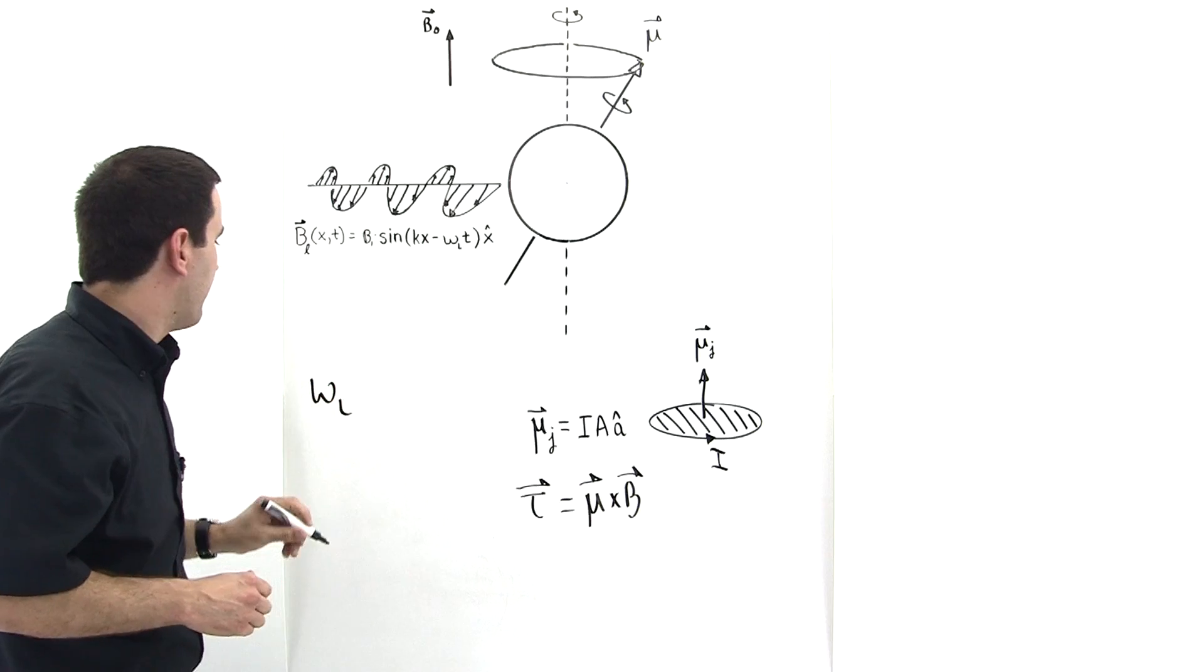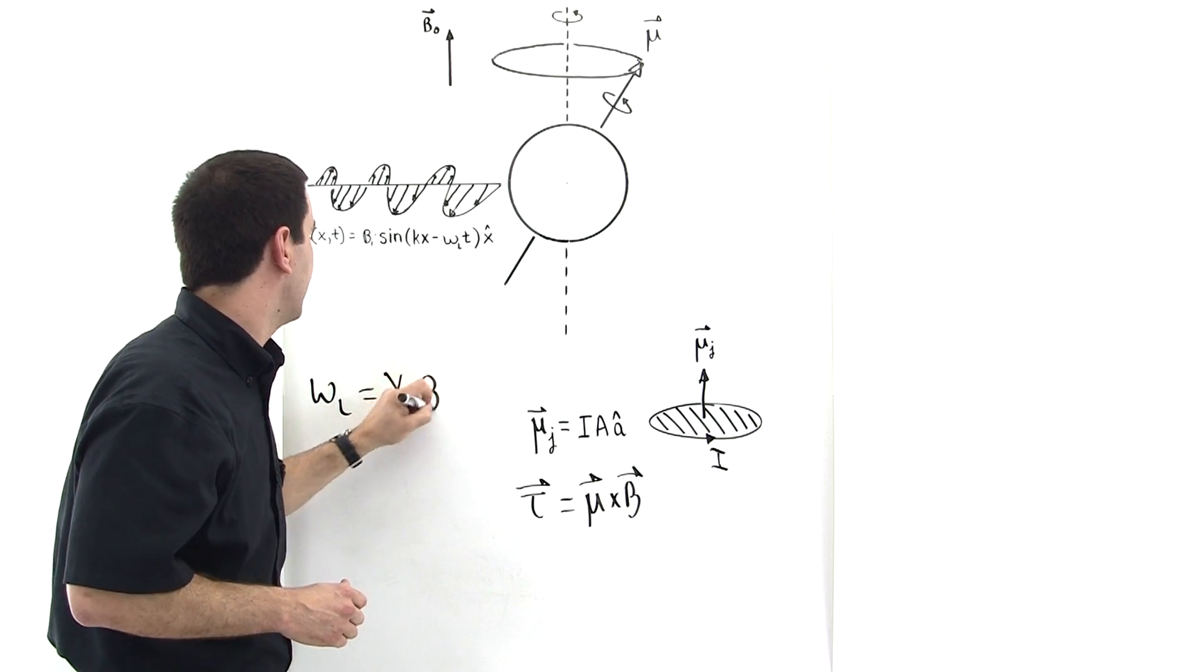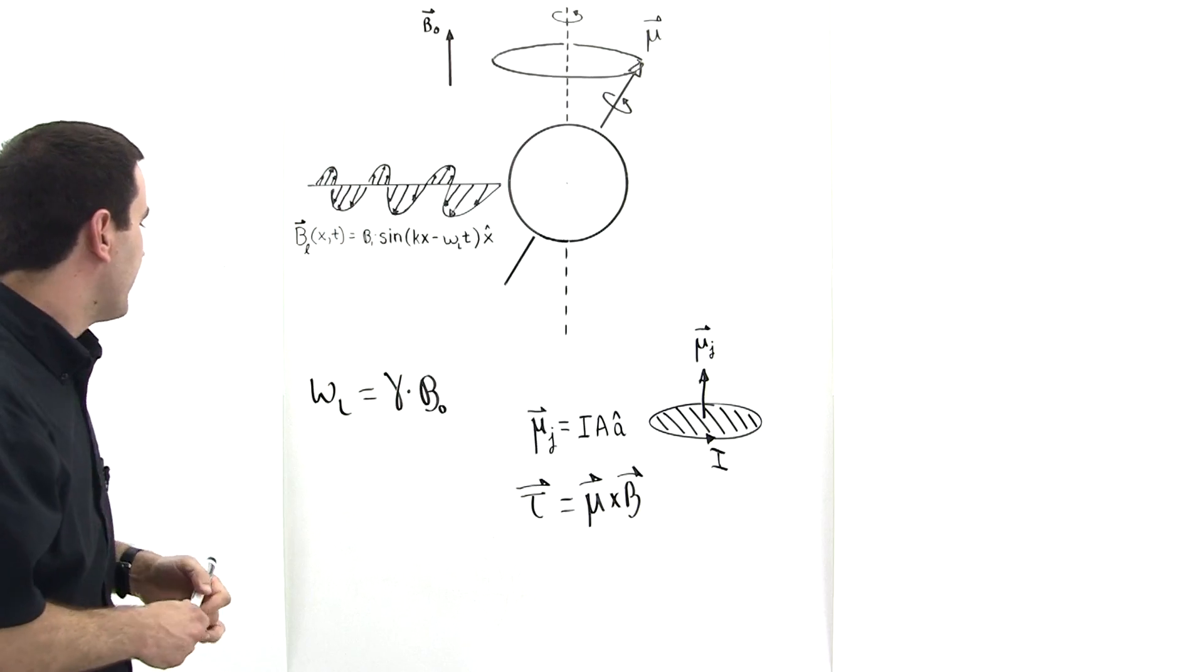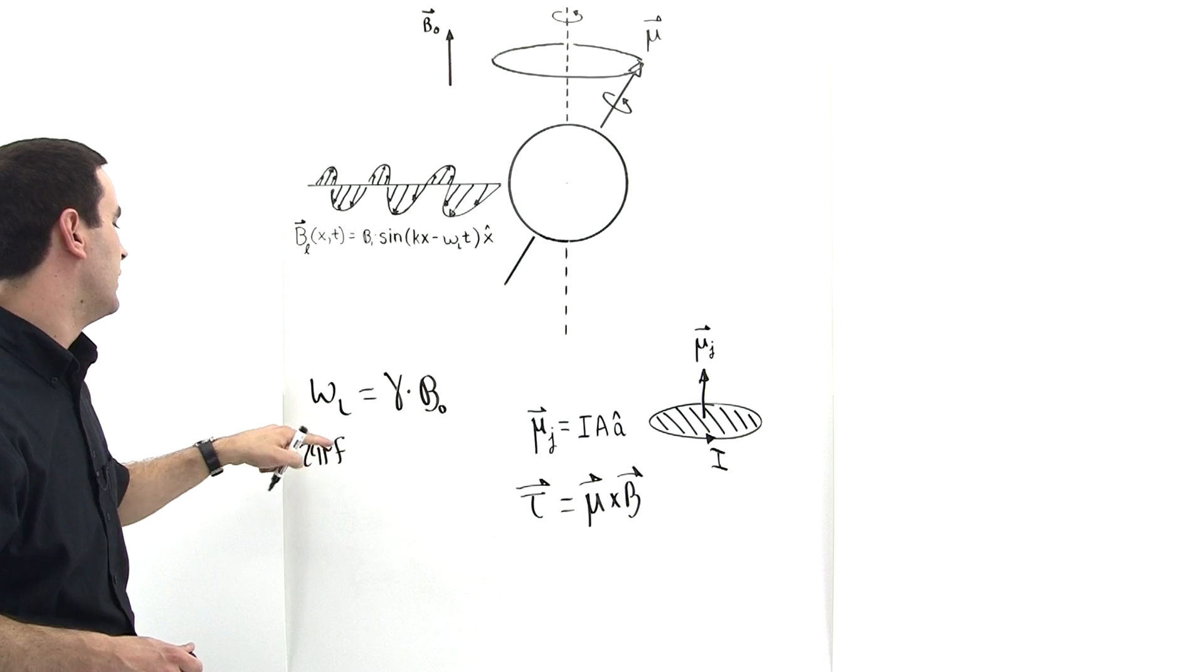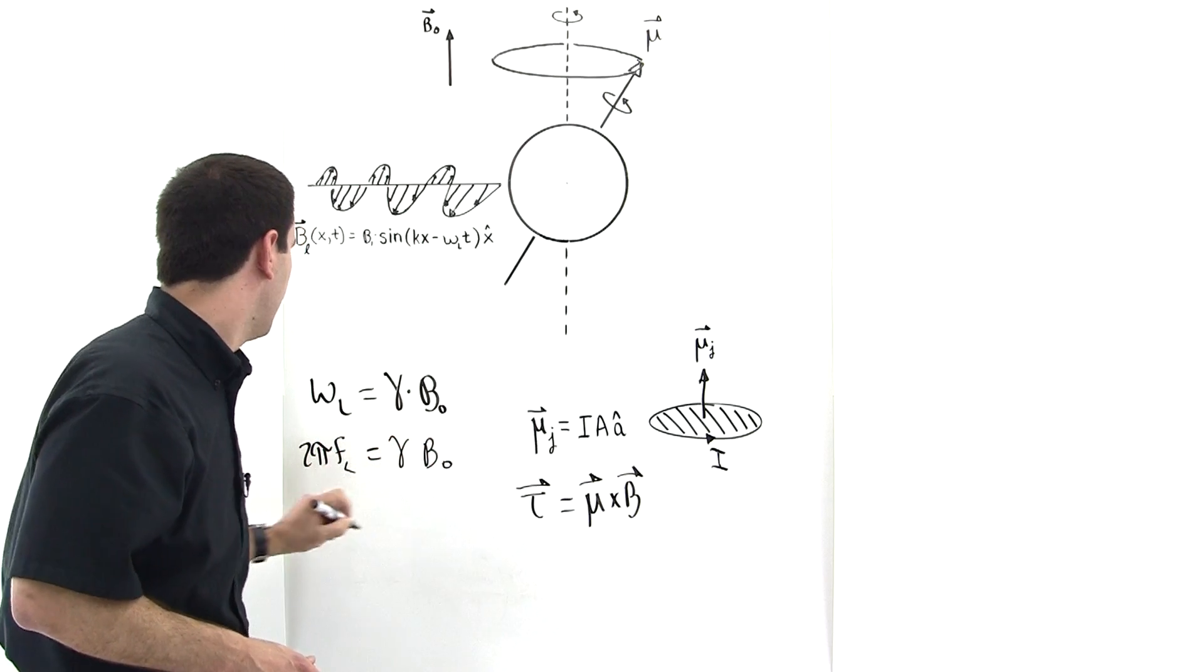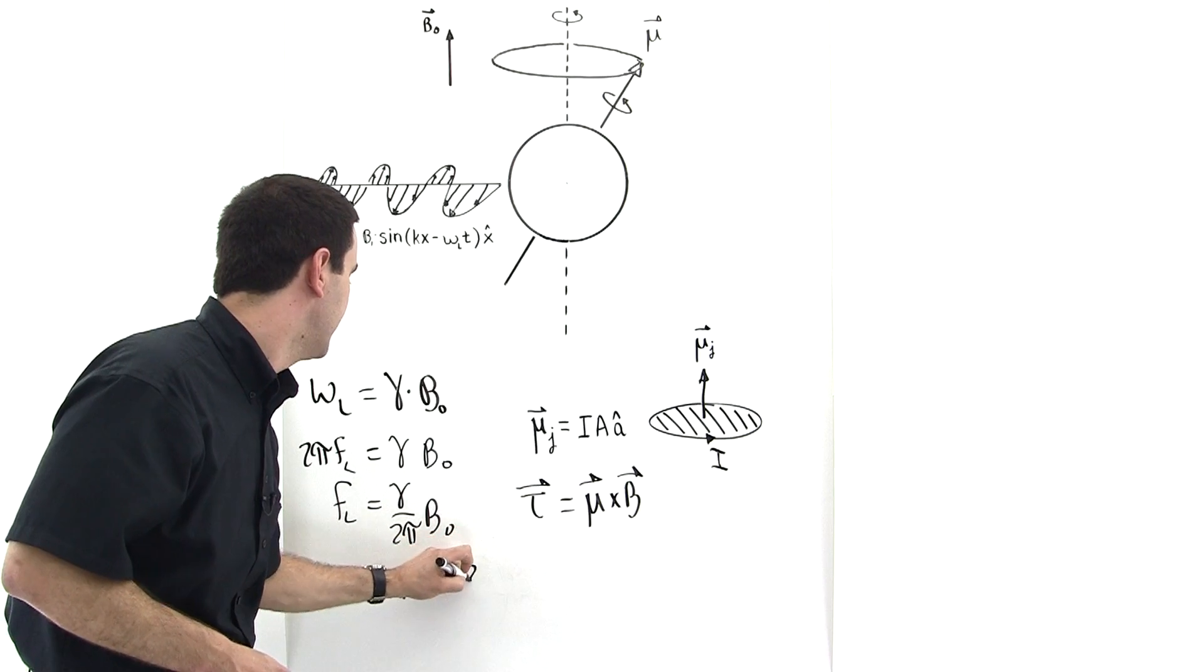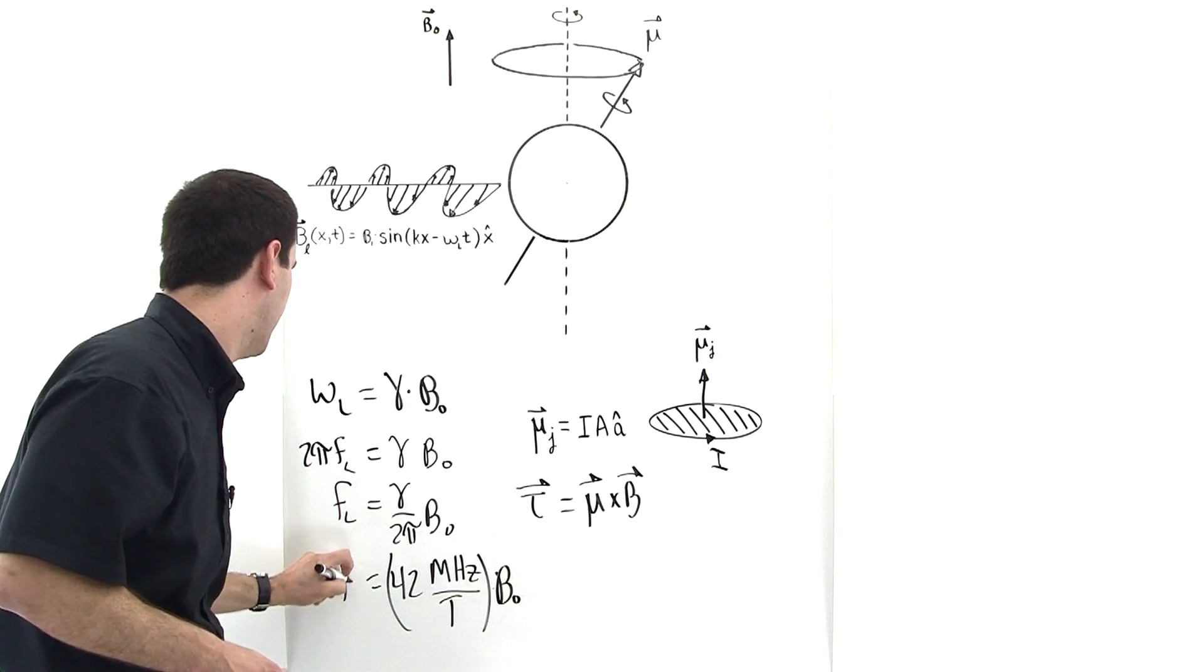We can define ωL, the Larmor angular frequency, to be equal to γ times the external B field that's applied, B0. This value here is 2.67 times 10 to the eighth. If we substitute 2πf, this converts radians per second to oscillations per second. So fL equals γ over 2π times B0, which equals 42 megahertz per Tesla times the external B field that is applied.